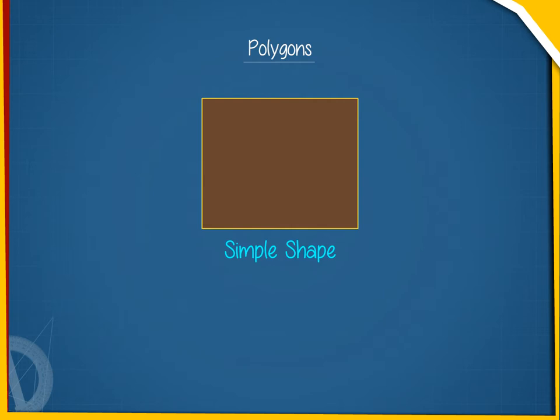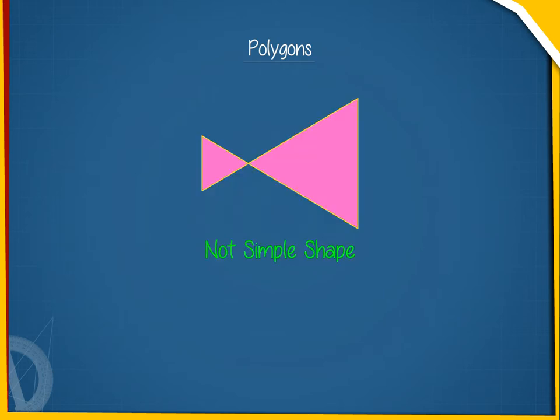A plane shape is said to be simple if it does not intersect itself. This shape is not a simple shape.